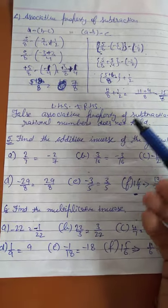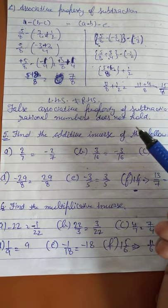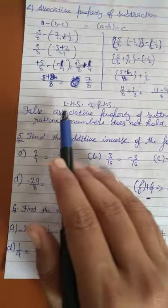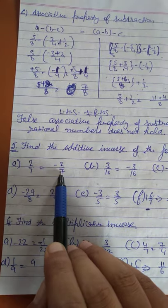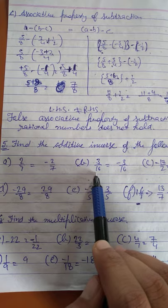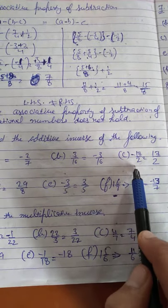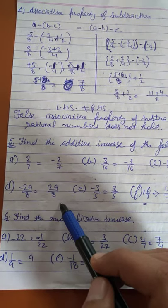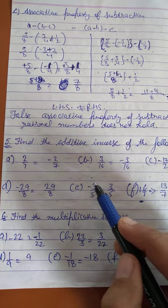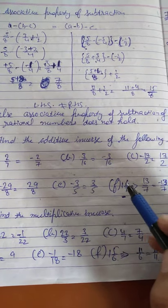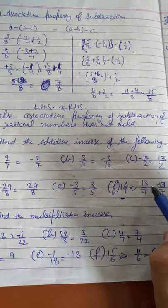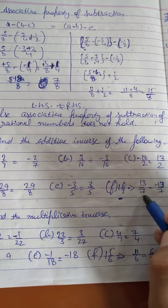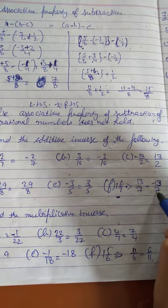In the fifth sum we find the additive inverse. The additive inverse of a positive rational number is negative, and vice versa. So: additive inverse of 2 over 7 is minus 2 over 7; of 3 over 16 is minus 3 over 16; of minus 17 over 2 is 17 over 2; of minus 29 over 8 is 29 over 8; of minus 3 over 5 is 3 over 5; of 1 and 6 over 7 is minus 1 and 6 over 7.